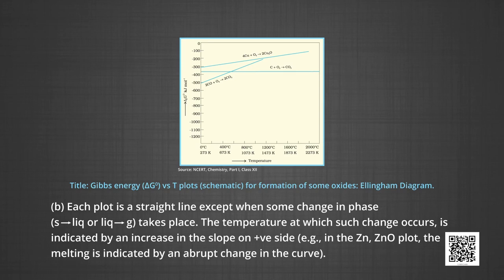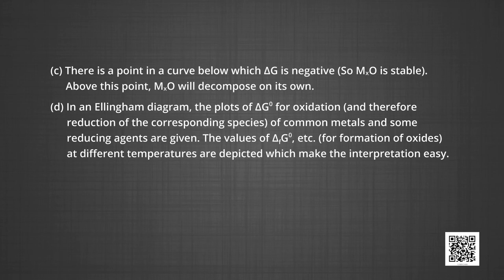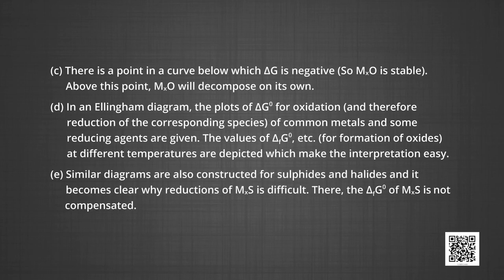Each plot is a straight line except when some change in phase — from solid to liquid or liquid to gas — takes place. The temperature at which the change occurs is indicated by an increase in slope on the positive side. For example, in the zinc/zinc oxide plot, melting is indicated by an abrupt change in the curve. There is a point in the curve below which ΔG is negative, so metal oxide is stable; above this point, metal oxide will decompose on its own. Similar diagrams are also constructed for sulphides and halides, which makes clear why reduction of metal sulphide is difficult, as the ΔG° of formation of metal sulphide is not compensated.